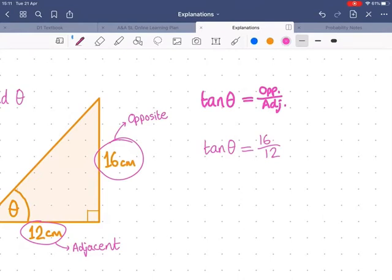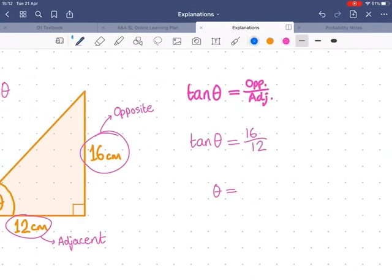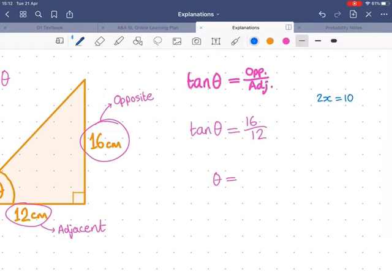Now our goal is to find theta, so theoretically my next step I should be writing theta equals something. But how do I get rid of this tan, move it over to the other side? Well, let's think about what usually happens in maths. Let's say I've got 2x equals 10. That means 2 times x equals 10, and without thinking you would do divide by 2. But why do you do that? Because dividing by 2 is the inverse of multiplying by 2. So the inverse of times 2 is divided by 2. So you divide both sides by 2 and you get x equals 5.